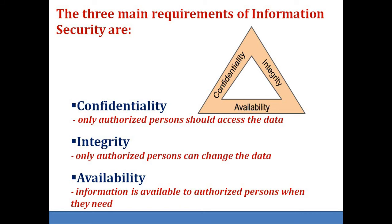Integrity means only authorized persons can change the data. For example, for bank data, any change in a transaction entry will be done only by the concerned bank officials, not others. Availability means information is available to authorized persons when they need it. Authorized persons can get access to the data when and where they need.